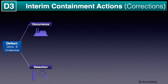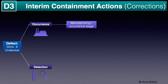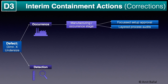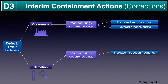Example: the problem is X dimension over size. In order to control occurrence, we will need to identify the stage where the defect occurred. Then actions such as focused setup approval and layered process audits — to ensure the process is followed as planned — can be taken. In order to control detection at the manufacturing stage, actions to increase detection frequency and display of a one-point lesson to improve operator awareness of the problem and precautions can be taken.